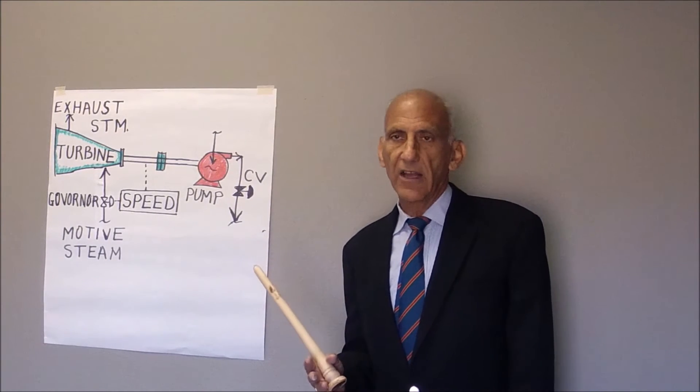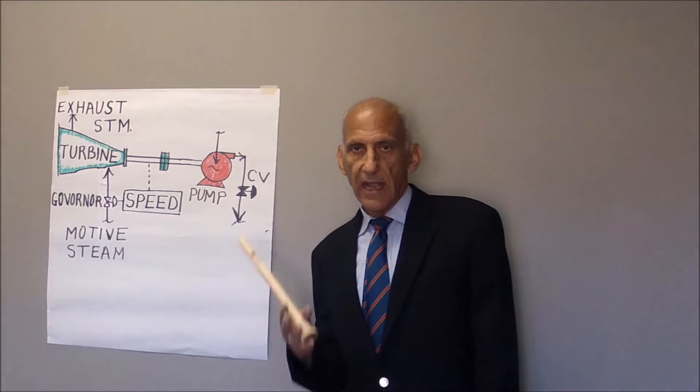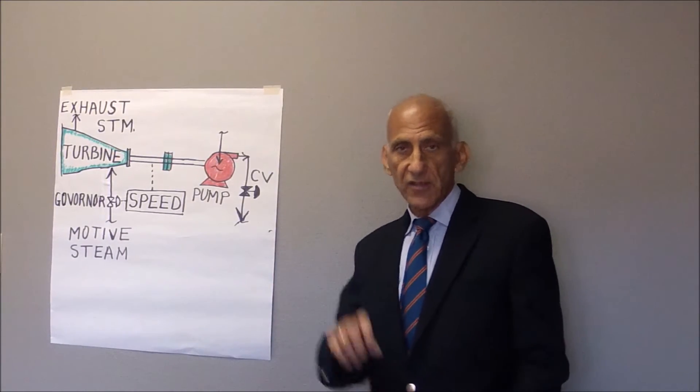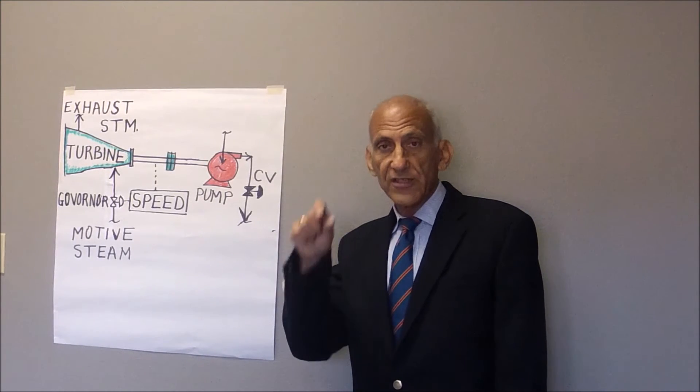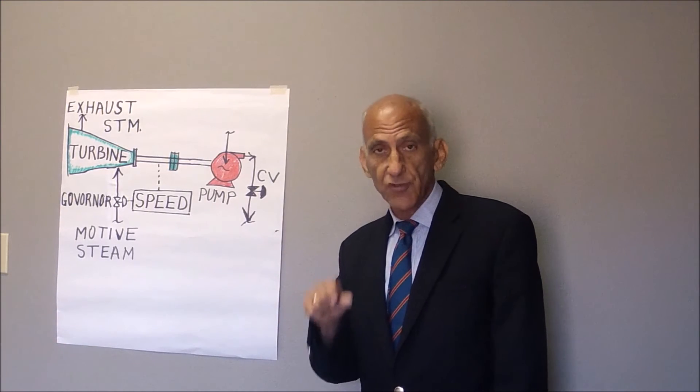Let's say the control valve is 50% closed. As you slow the turbine down, this little curved knob on the side of the turbine, that's the speed control.